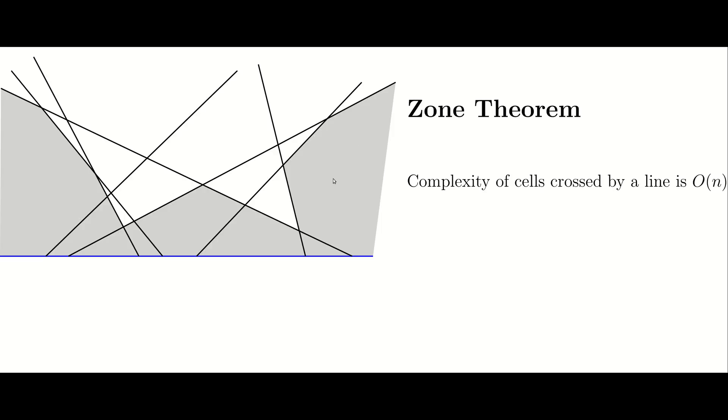The gray region will have a number of vertices and a number of edges. We can distinguish two different types of edges in this gray region: the edges that intersect the blue line and the rest.